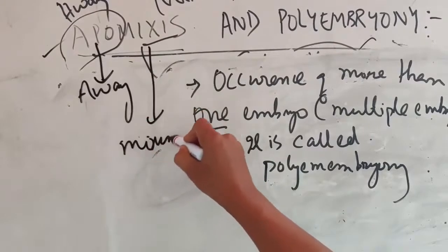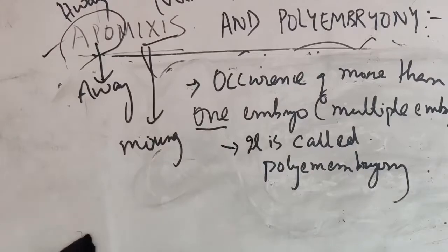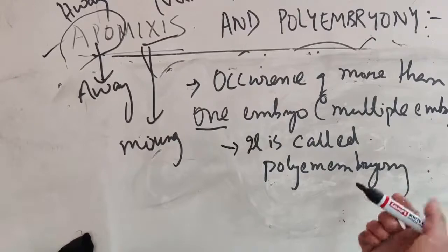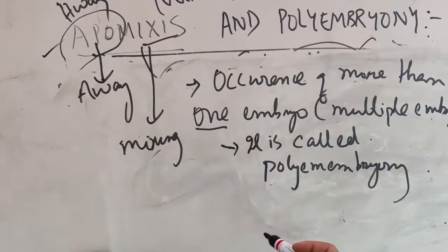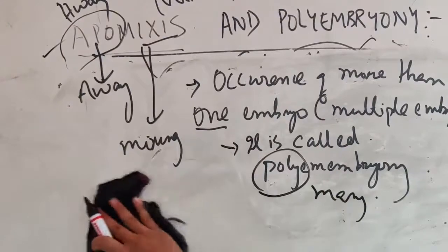Apomixis means away from mixing — away from fertilization. Seeds that can be formed without fertilization are known as apomictic seeds. Examples include Asteraceae and grasses. They can occur in different ways. The occurrence of more than one embryo, or multiple embryos, is known as polyembryony — poly means many embryos.